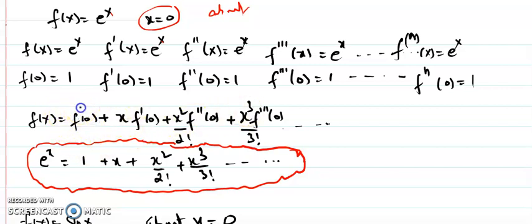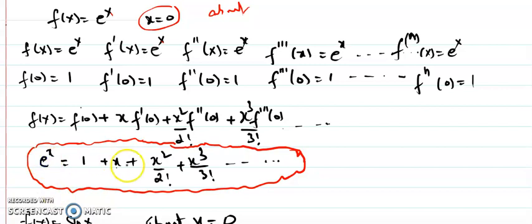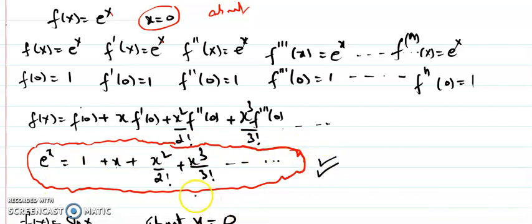Plugging in the values, we get 1 plus x plus x squared over 2 factorial plus x cubed over 3 factorial. This is the standard formula for the expansion of e^x in powers of x. It is very important to remember because we can make use of it in many Taylor series expansions.